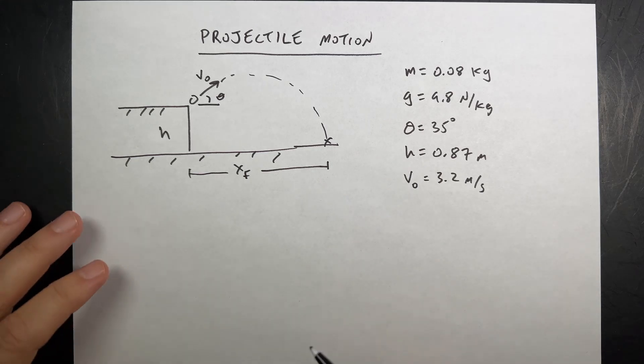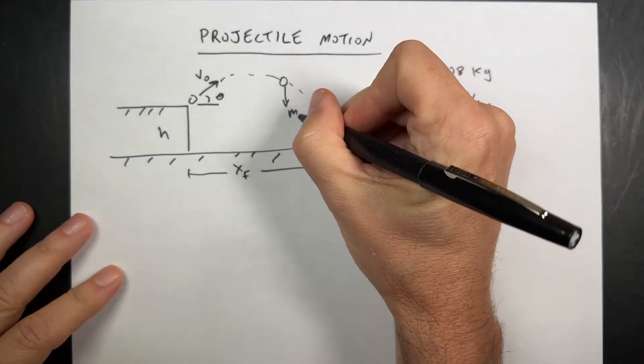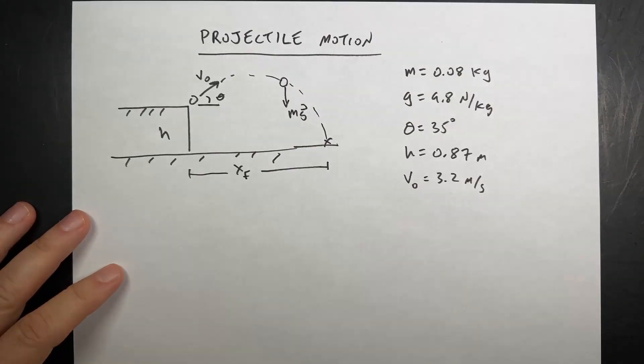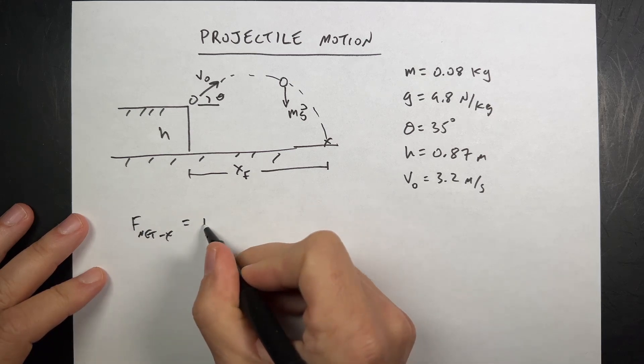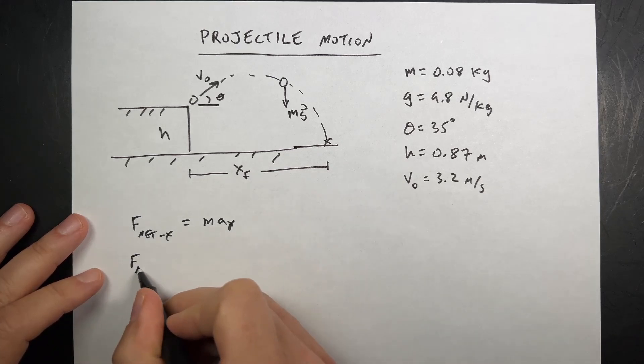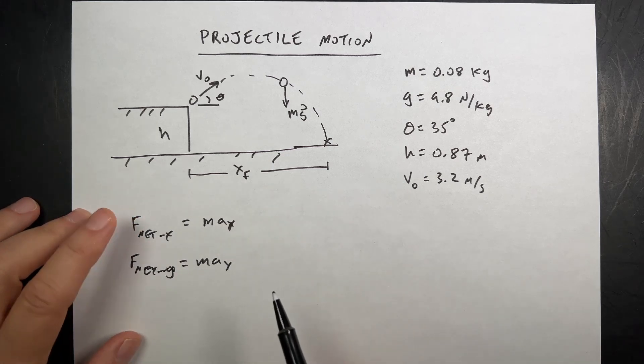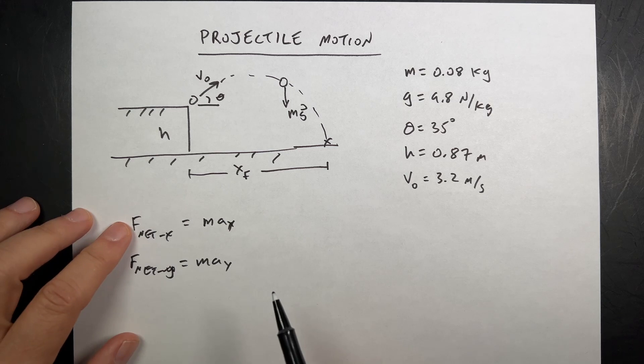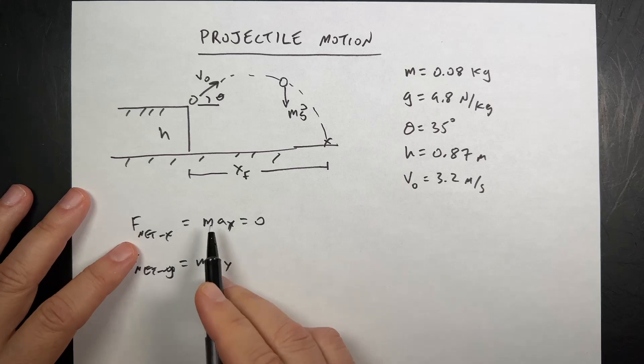First, what does projectile motion mean? So if I'm over here, if the ball is right there, I have a downward gravitational force mg, like that. And if I use Newton's second law, it says F net in the x direction is mass times acceleration in the x direction. F net in the y direction is mass times acceleration in the y direction. So there's no forces in the x direction, right? There's only that downward gravitational force.